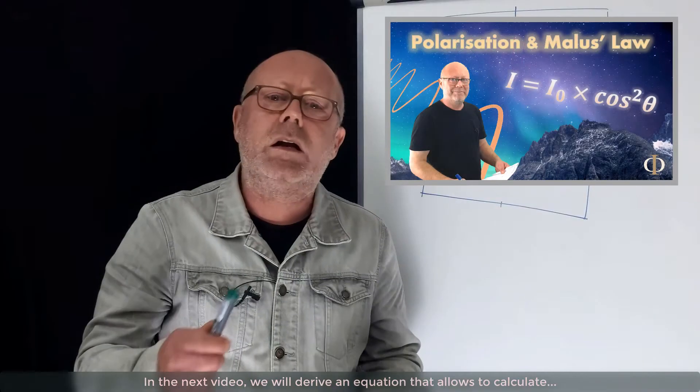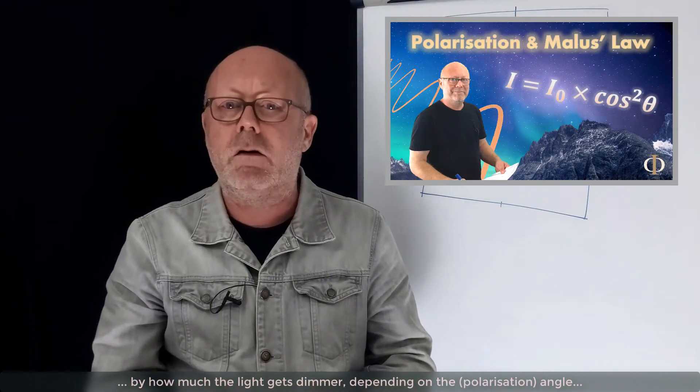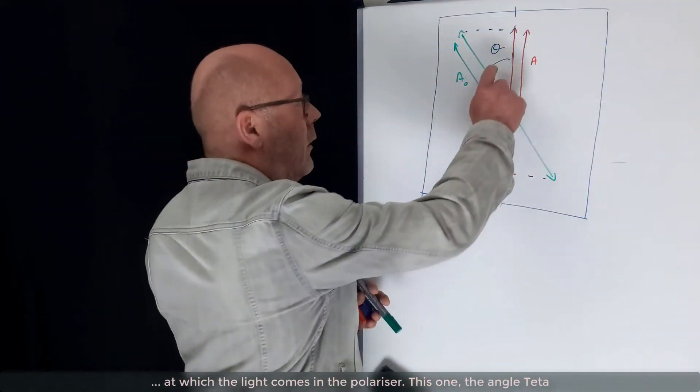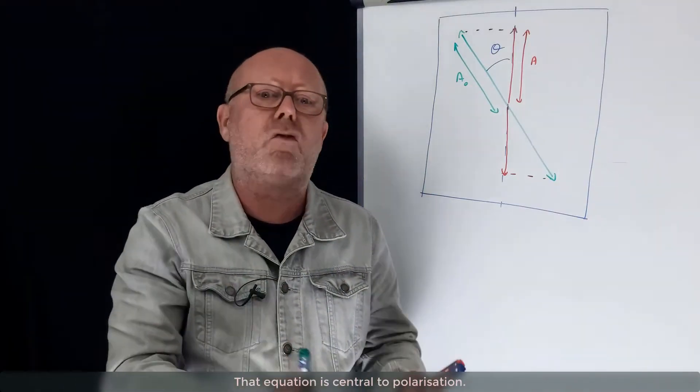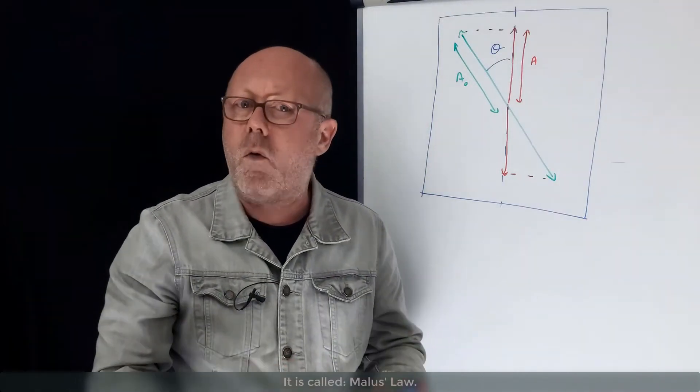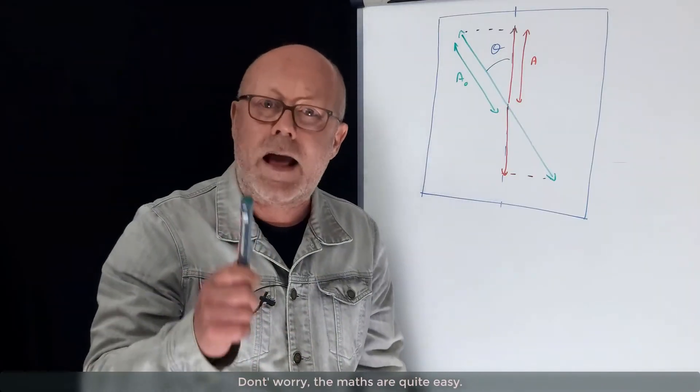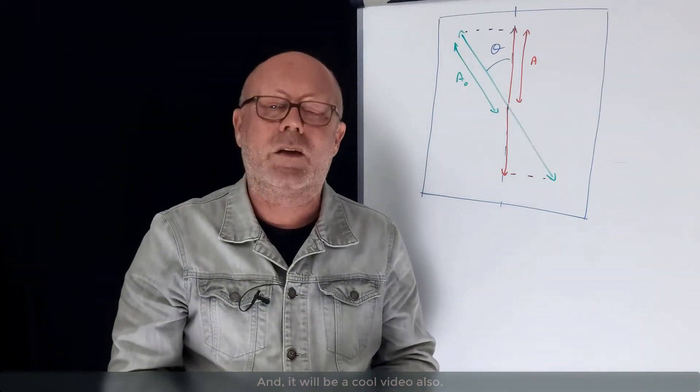In the next video, we will derive an equation that allows you to calculate by how much the light gets dimmer, depending on the angle at which the light comes in the polarizer. This one, the angle θ. That equation is central to polarization. It is called Malus law. Don't worry. The math are quite easy. And it will be a cool video also. So stay tuned.